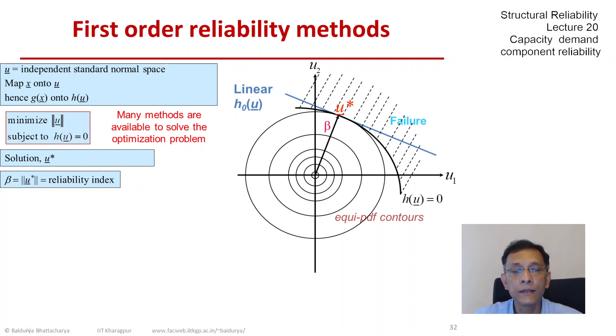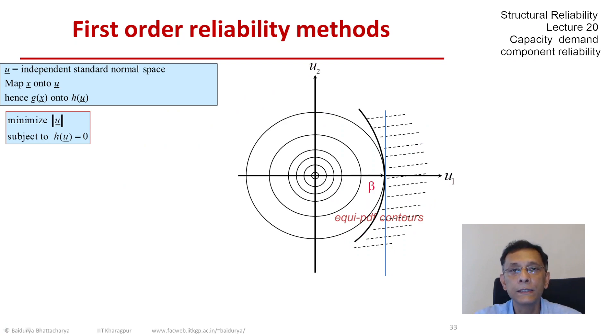It was located at the point u star and suppose we turn everything. Because of the rotational symmetry, the probability content does not change. So the same probability in this shaded region is identical to the probability in this shaded region.